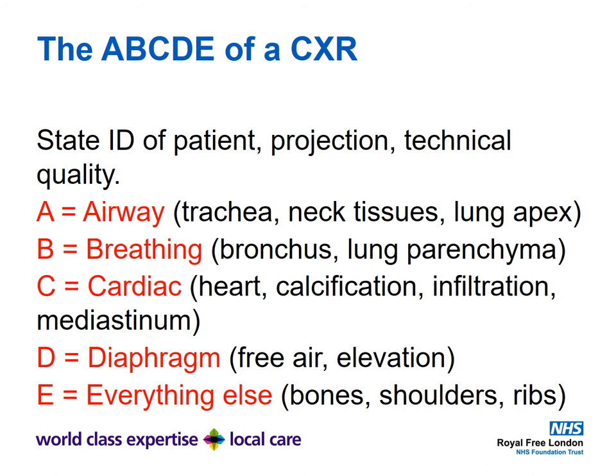A useful trick is the ABCDE of a chest X-ray — always state the patient details, projection, and technical quality first. As with acute medicine, A is for Airway — trachea, neck tissues, and lung apex; B for Breathing — bronchi and lung parenchyma; C for Cardiac — heart, calcification, infiltration, and mediastinum; D for Diaphragm — free air and elevation; E for Everything else — bones, shoulders, and ribs.